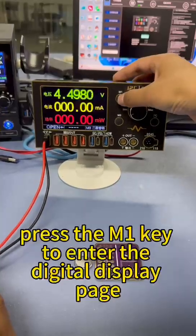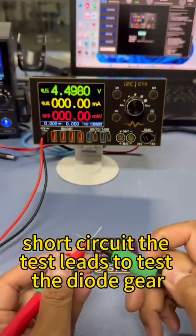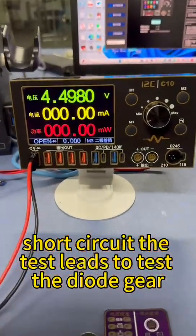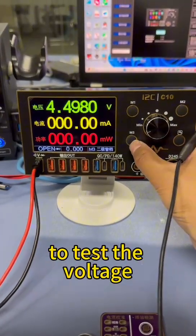Press the M1 key to enter the digital display page. Short circuit the test leads to test the diode gear, and press the M3 key to switch to the voltage gear to test the voltage.